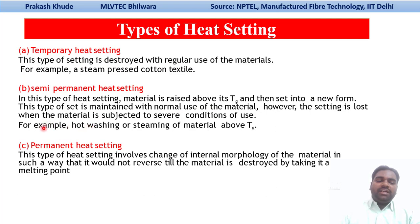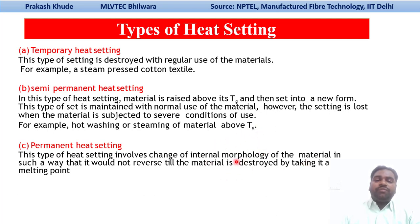The next type is permanent heat set. This involves changing the internal morphology of the material in such a way that it would not reverse until the material has been destroyed above its melting point. We are ultimately changing the internal morphology of the material, and no reversal takes place until it is completely destroyed above its melting point.